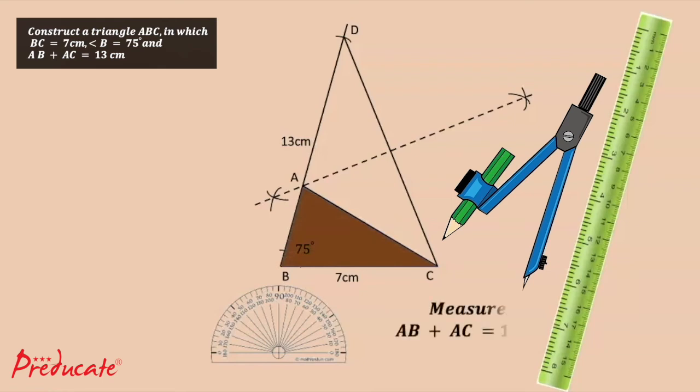Finally, measure side AB and AC. Sum of both the sides should be equal to 13 cm.